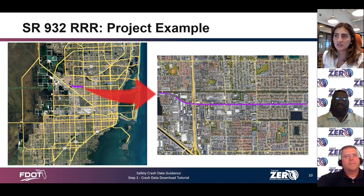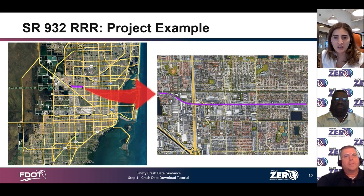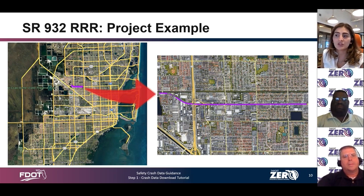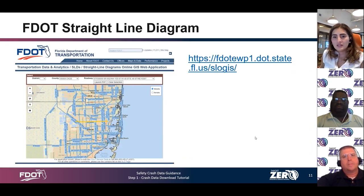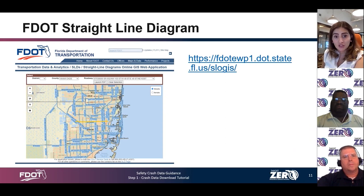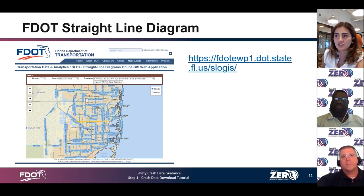To download the crash data, you will need the State Highway Roadway ID, the beginning and ending milepost, and the years or dates of crash data desired. Since this analysis is being completed along a segment, we need to understand the full length and endpoints of the corridor. You can obtain the Roadway ID from CAR Online, which has an easy-to-access query. If you don't have that information handy, you can also use the FDOT Straight Line Diagram, which has an easy-to-navigate GIS web application.